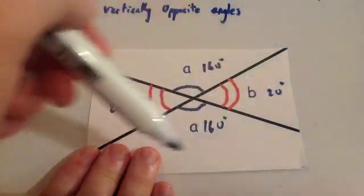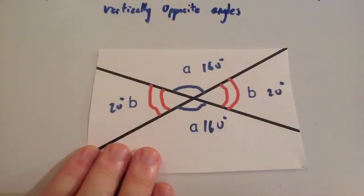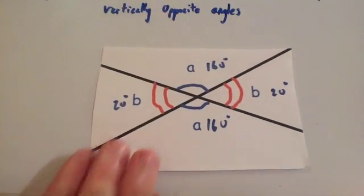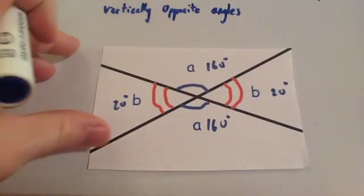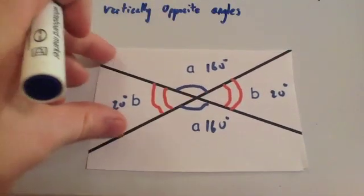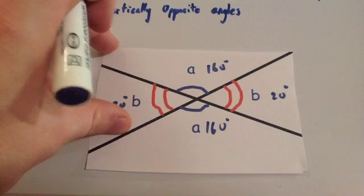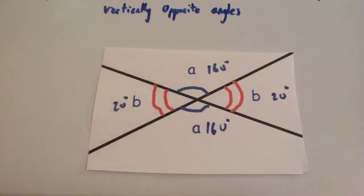If you just check, the whole thing adds up to 360. This is like a typical exam question on vertically opposite angles. Normally these are included in parallel line questions where you've got alternate and corresponding angles.